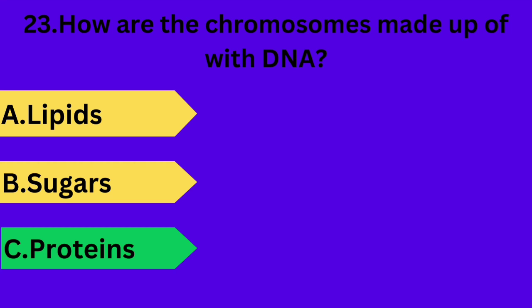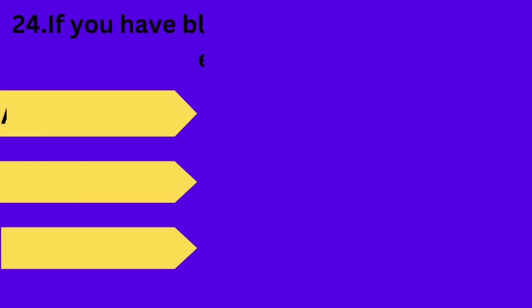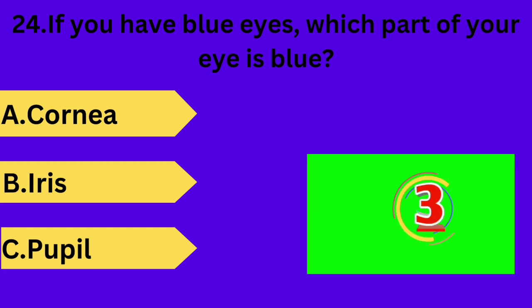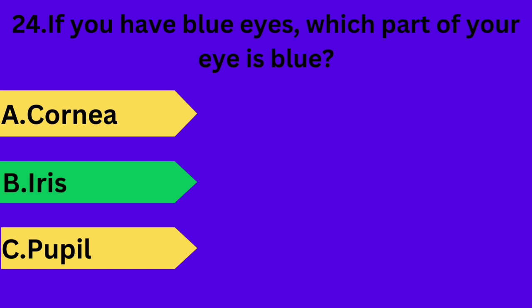And next question is: if you have blue eyes, which part of your eye is blue? Option A: cornea. Option B: iris. Option C: pupil. Your time starts now. Answer is option B: iris.